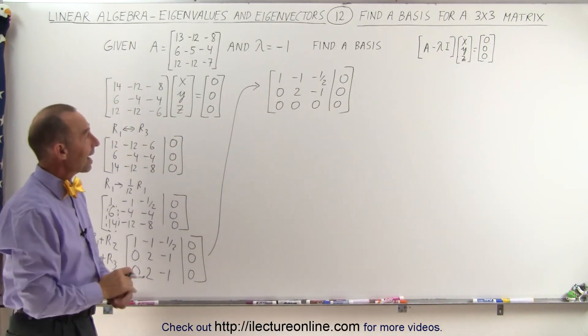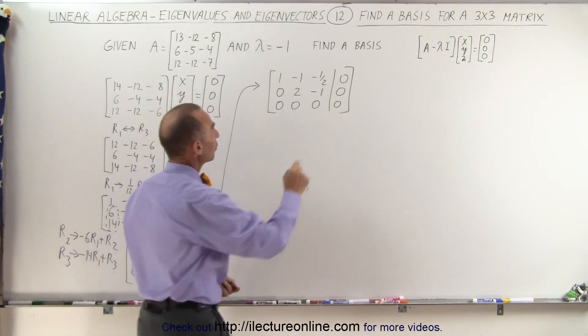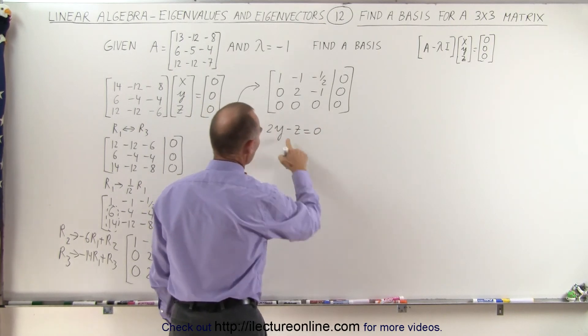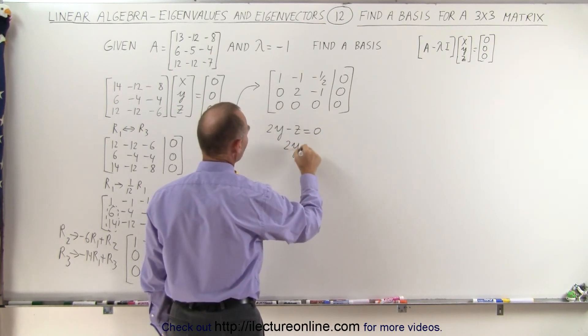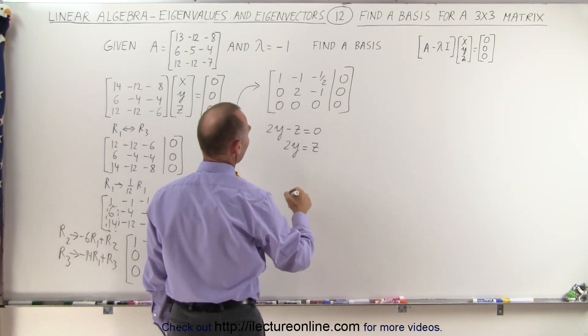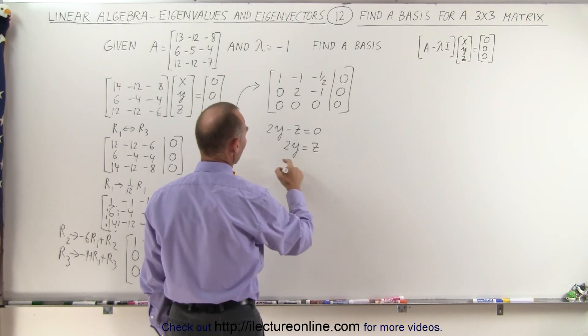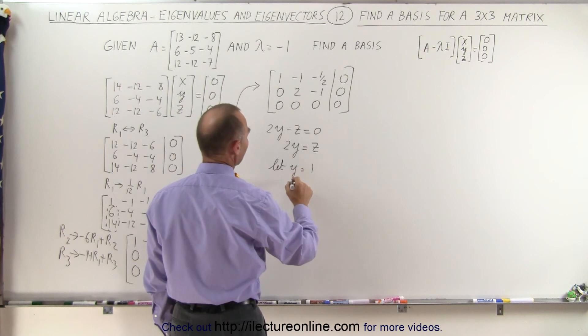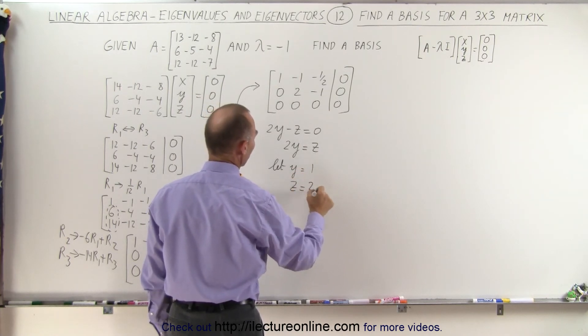All right, now to find the eigenvector. We can go to the second row and realize that 2y minus z equals 0. When we bring this across here, we get 2y is equal to z, and we can let y equals 1, then z equals 2 times 1, or 2.